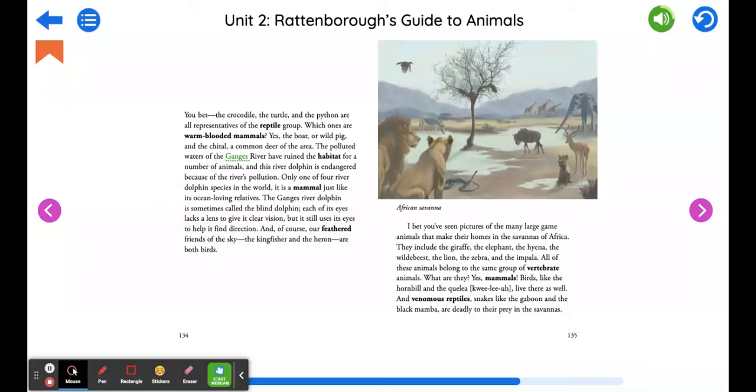The polluted waters of the Ganges river have ruined the habitat for a number of animals. And this river dolphin is endangered because of the river's pollution. Only one of four river dolphin species in the world, it is a mammal, just like its ocean-loving relatives. The Ganges river dolphin is sometimes called the blind dolphin. Each of its eyes lacks a lens to give it clear vision, but it still uses its eyes to help it find direction.